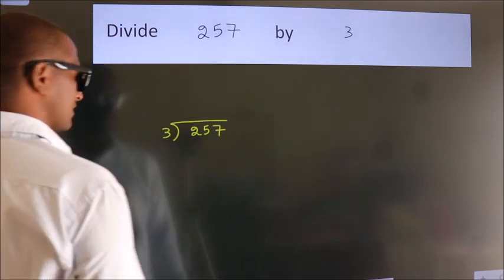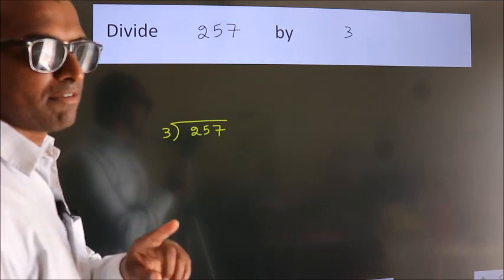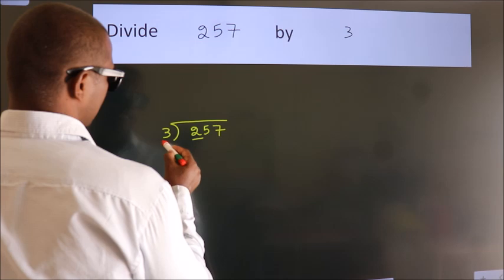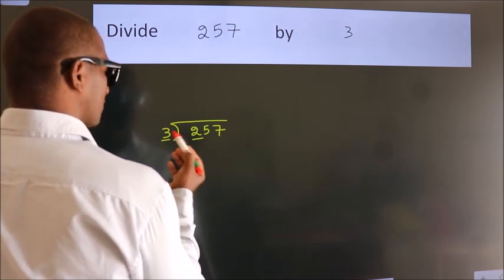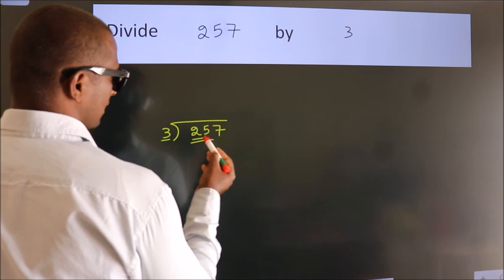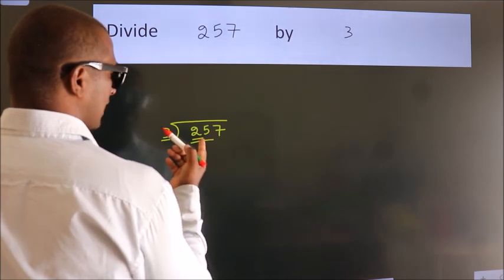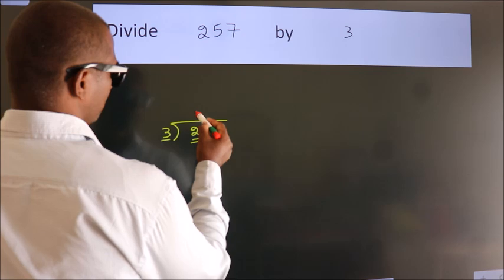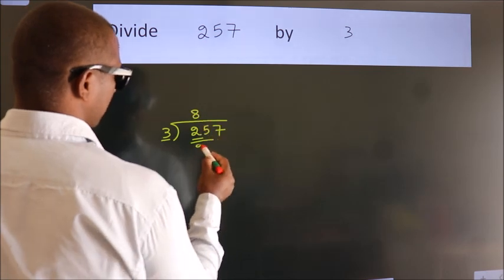This is step 1. Next, here we have 2, here 3. 2 is smaller than 3, so we should take 2 numbers, 25. A number close to 25 in the 3 table is 3 eights, 24.